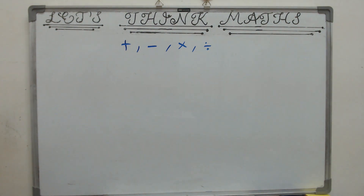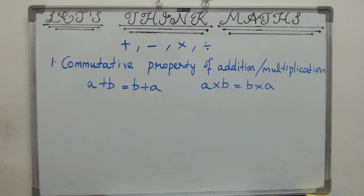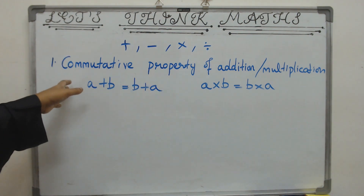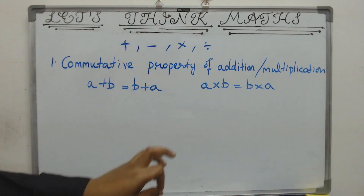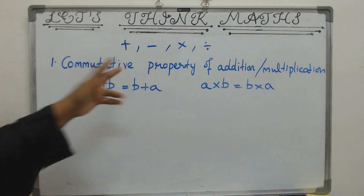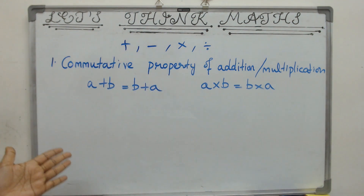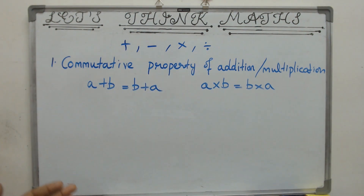We start with the first property known as the commutative property of addition and multiplication. What does the word 'commute' mean? If I say I commute to school by bus, it means I go to school and then I come back home — that is, go back and forth. That is exactly what this means: both addition and multiplication work both ways. Either you do a plus b or b plus a, a into b or b into a — changing the order does not affect the answer.